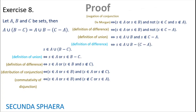Finally, using the definition of difference: S is in (A union B) without (C without A). We already have an argument connected by equivalences that starts with S in A union (B without C) and ends with S in (A union B) without (C without A), proving the equality. This concludes exercise number 8.